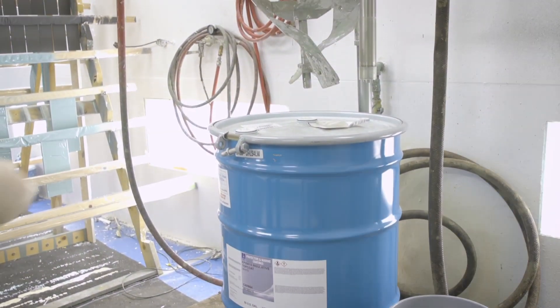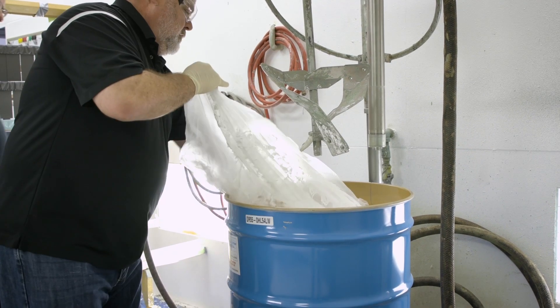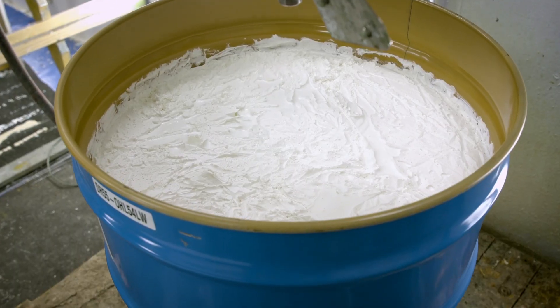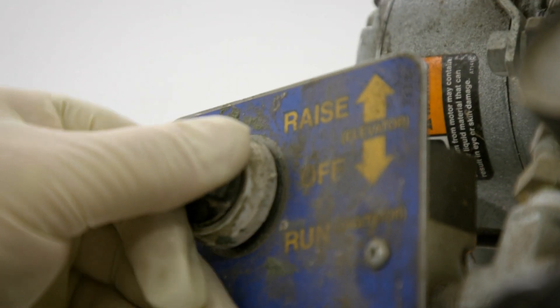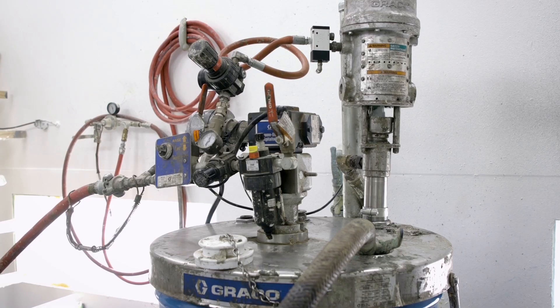To begin, start by opening and inspecting the product in the drum. Turn on your mixer and drop the blades into the product. Let HeatFlex mix for around 20 minutes.